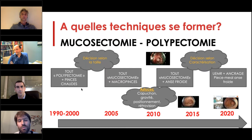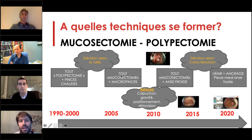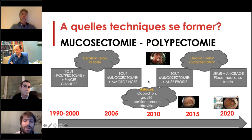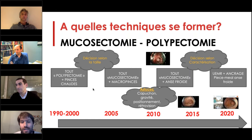On a la même chose dans la mucosectomie et polypectomie. Dans les années 90-2000, tout s'était diagnostiqué selon la taille — tout polypectomie aux pinces chaudes pour les petits polypes, puis tout mucosectomie aux macropinces froides. Ensuite on a progressé avec une décision selon la caractérisation : mucosectomie pour les lésions de plus d'un centimètre et anse froide pour les lésions de moins d'un centimètre. Puis la mucosectomie sous-marine et l'ancrage de l'anse pour les lésions planes et fibreuses. Sans formation théorique et pratique, on a du mal à optimiser ces résections.